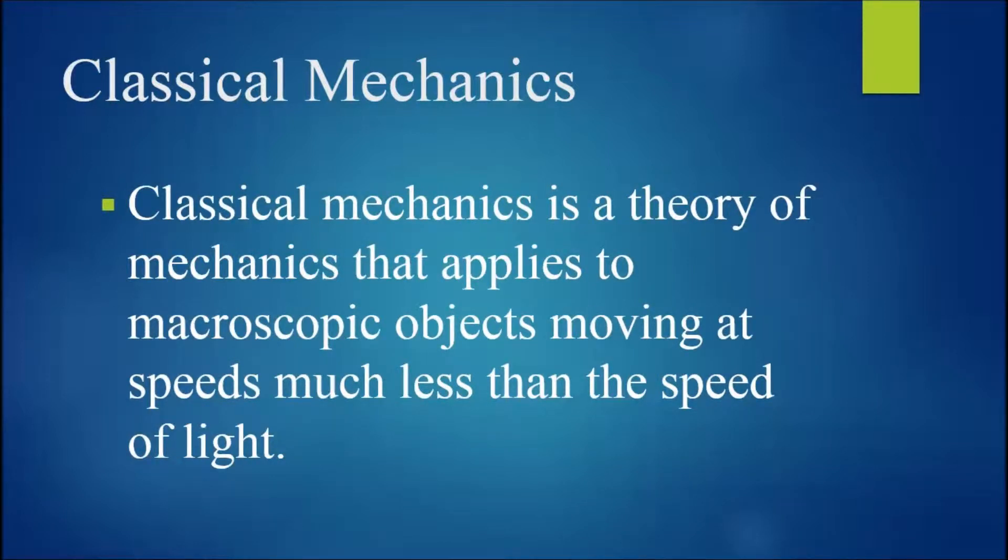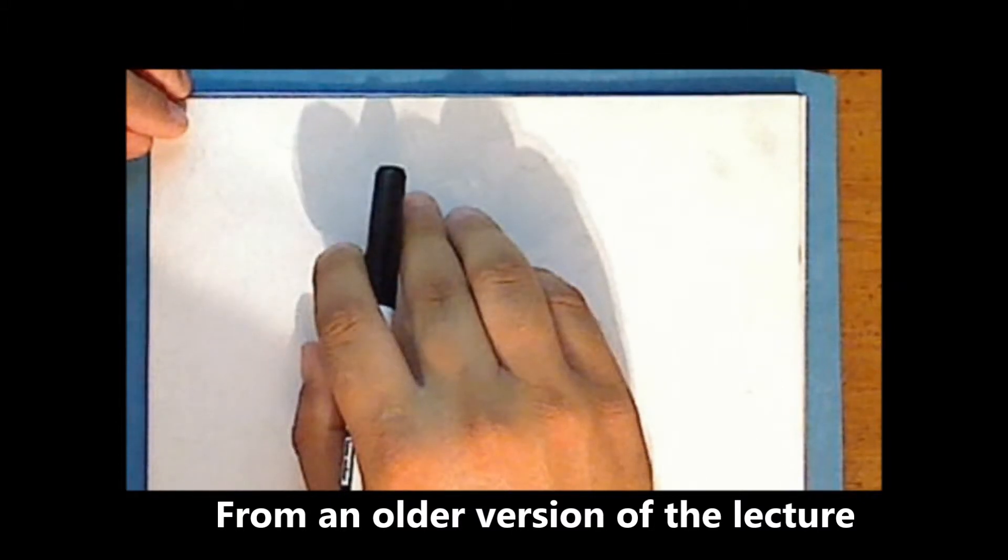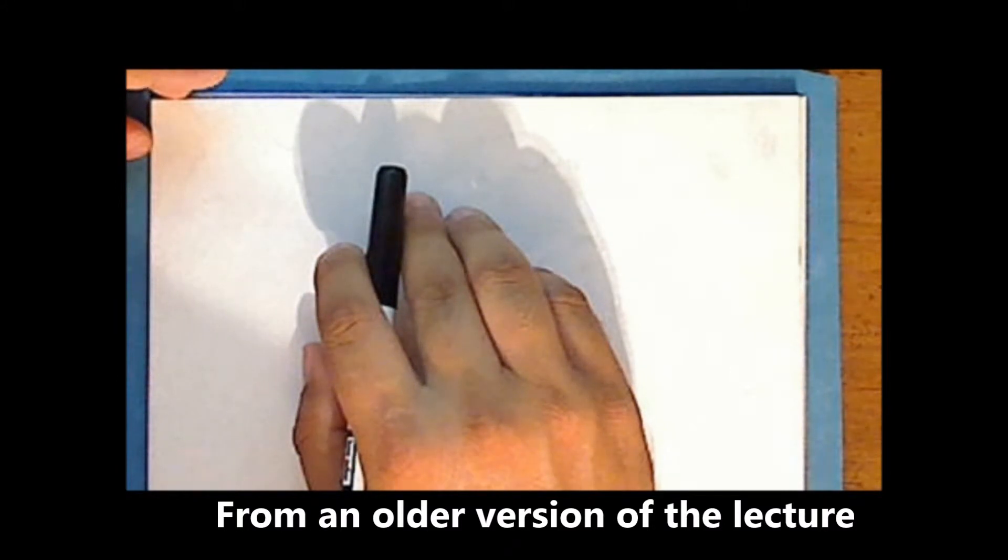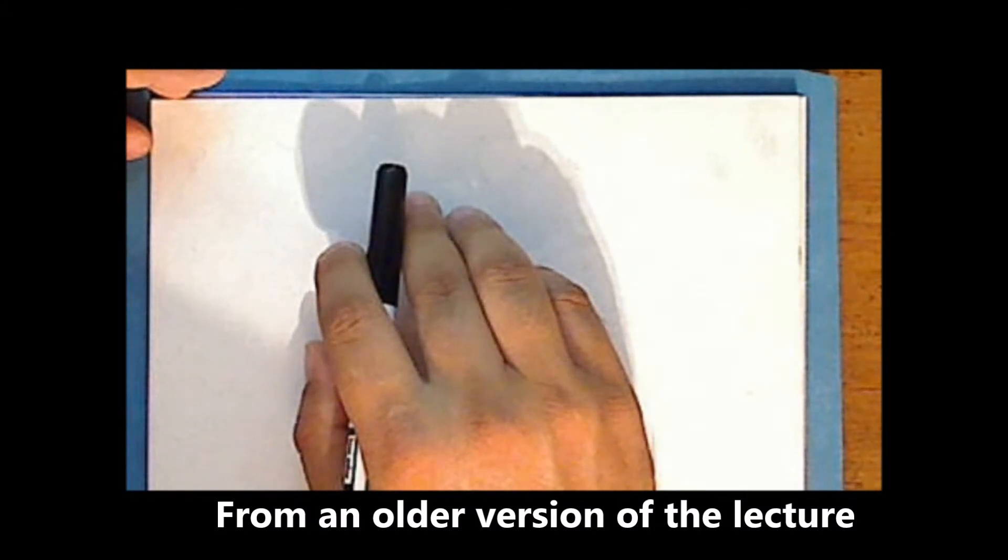So, classical mechanics is a theory of mechanics that applies to macroscopic objects moving at speeds much less than the speed of light. Okay, so now we know that classical mechanics is a theory that explains the relationship among force, matter, and motion, and that this theory is based on Newton's three laws of motion, which apply to objects much larger than atoms and for speeds much less than the speed of light.